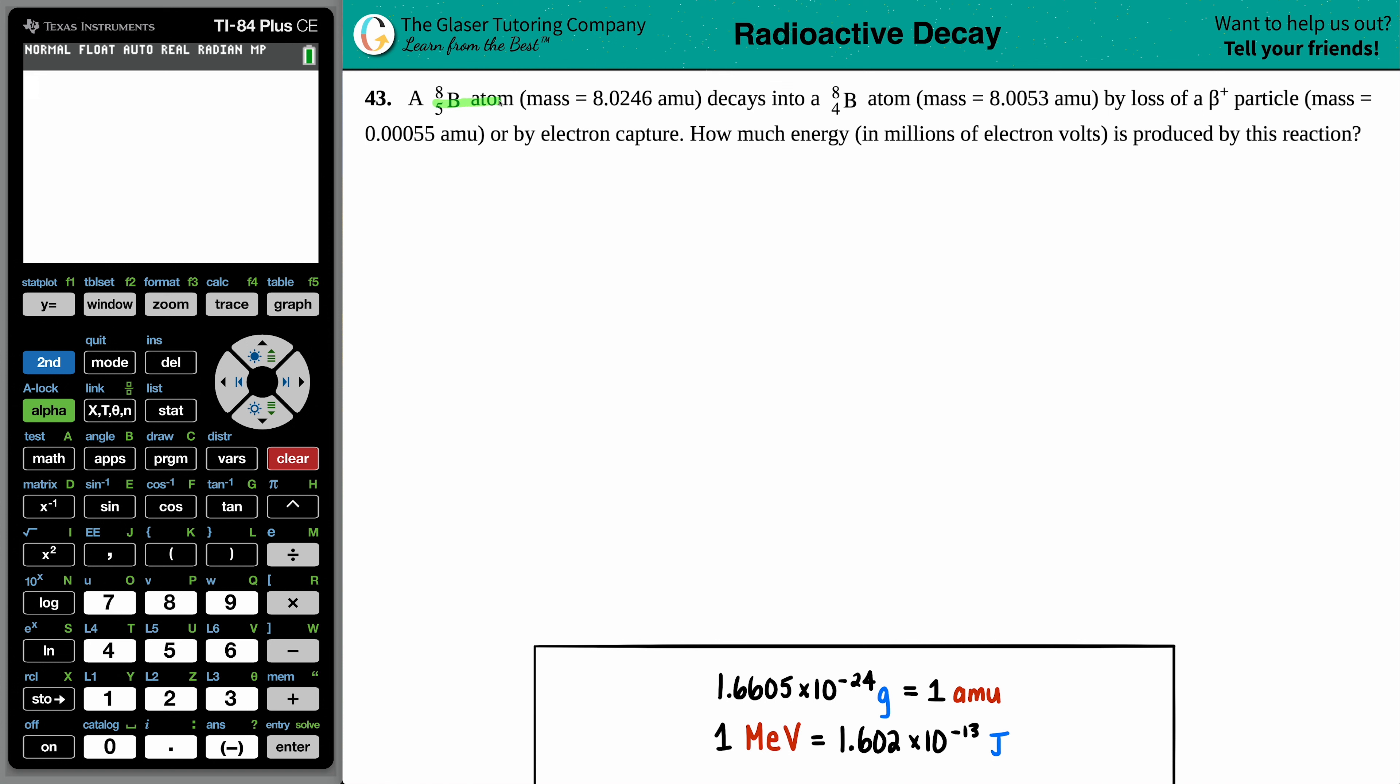A boron-8 atom, which has a mass of 8.0246 AMUs, decays into a boron-8 atom with a mass of 8.0053 AMUs by loss of a positron particle (plus charge) which has a mass of 0.00055 AMUs, or by electron capture. How much energy in millions of electron volts is produced by this reaction?